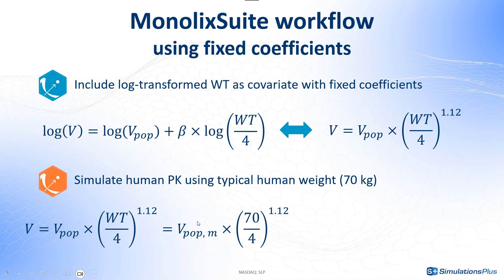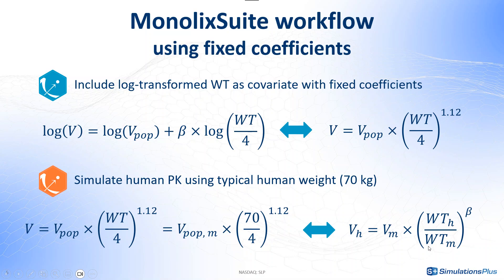And the vpop I'm going to have is actually the value I have estimated using monkeys, so that's a vpop_m. So I can see that the way the volume used for the simulation will be calculated actually corresponds to the allometric scaling formula we have seen in the previous slides, with the volume being the volume for humans calculated from the volumes in monkeys, the ratio of body weights, and the beta coefficient. Now let's do it step by step with our concrete example.